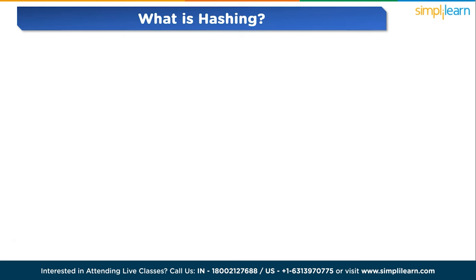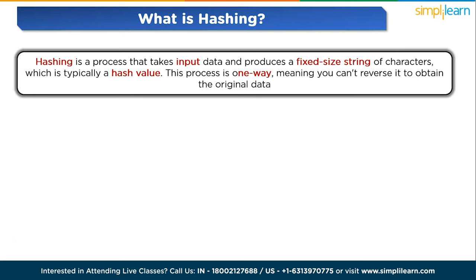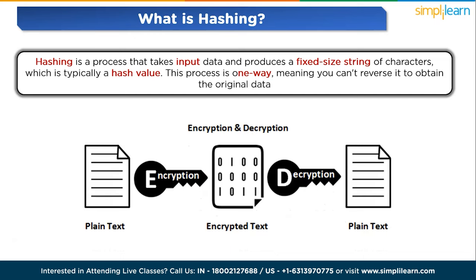Now moving to our topic — first we will start with what is hashing. Hashing is a process that takes input data and produces a fixed-size string of characters, which is typically a hash value. This process is one-way, meaning you can't reverse it to obtain the original data. The key here is that the same input will always produce the same hash, but even a small change in the input will result in a completely different hash.